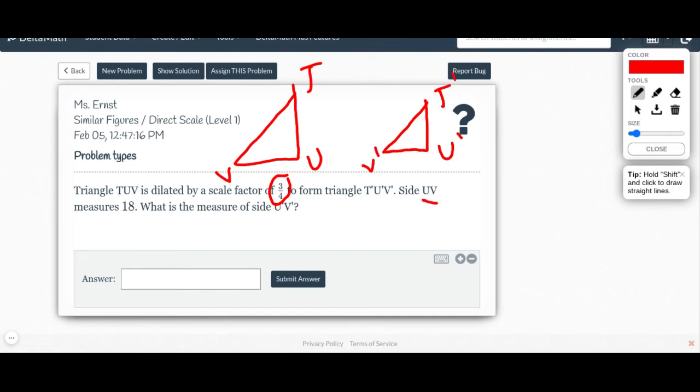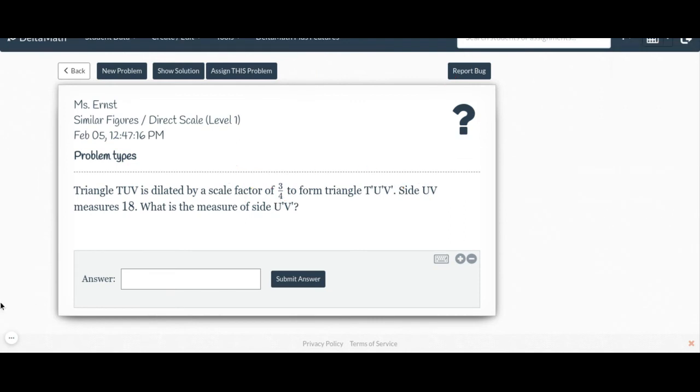Okay, I know that side UV measures 18, so UV is right here, measures 18. And so I need to figure out 18 times 3/4, what does that equal? So we can just plug that into a calculator, you can use the fractional understanding there, either one really works, but it looks like this would be 13.5 when we take 3/4 times 18. So to answer the question, side UV is going to be 13.5.